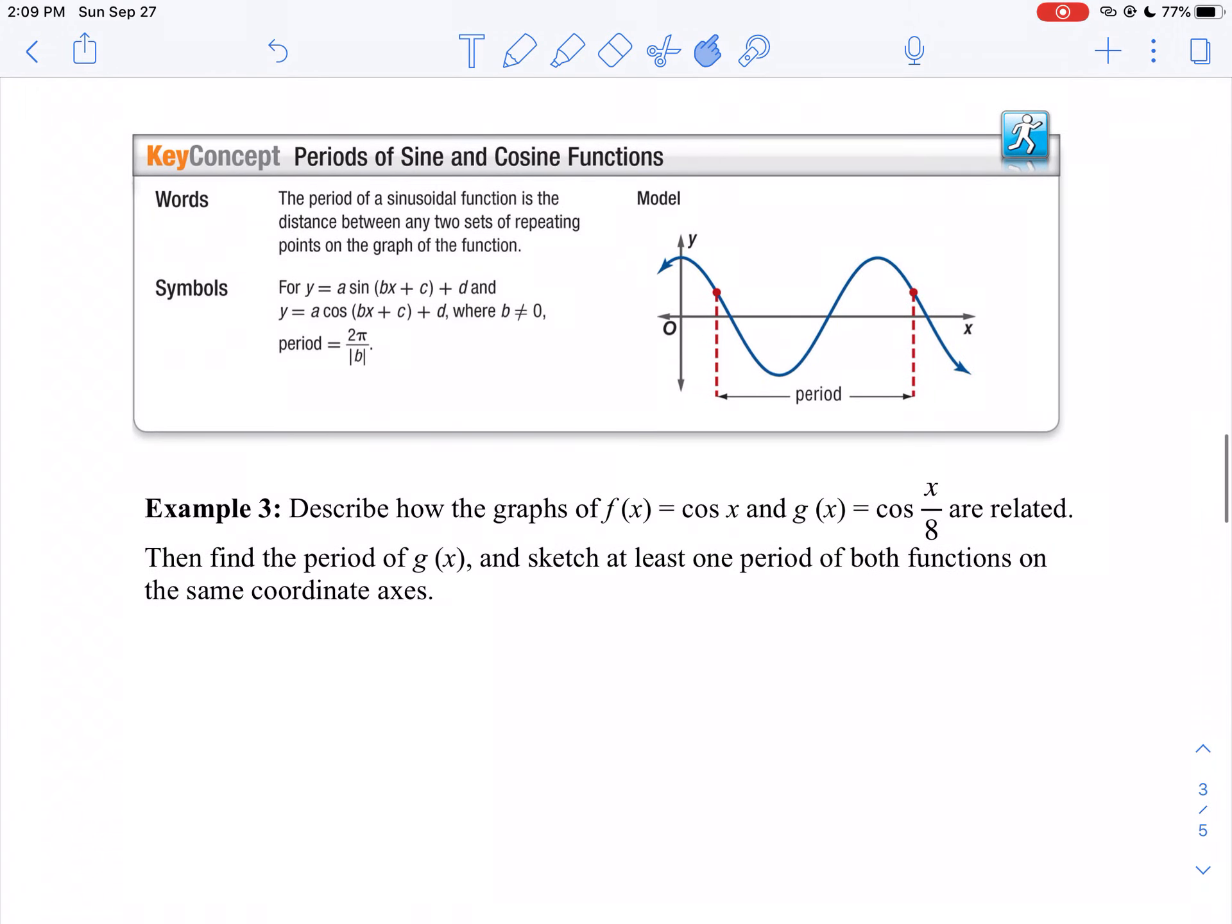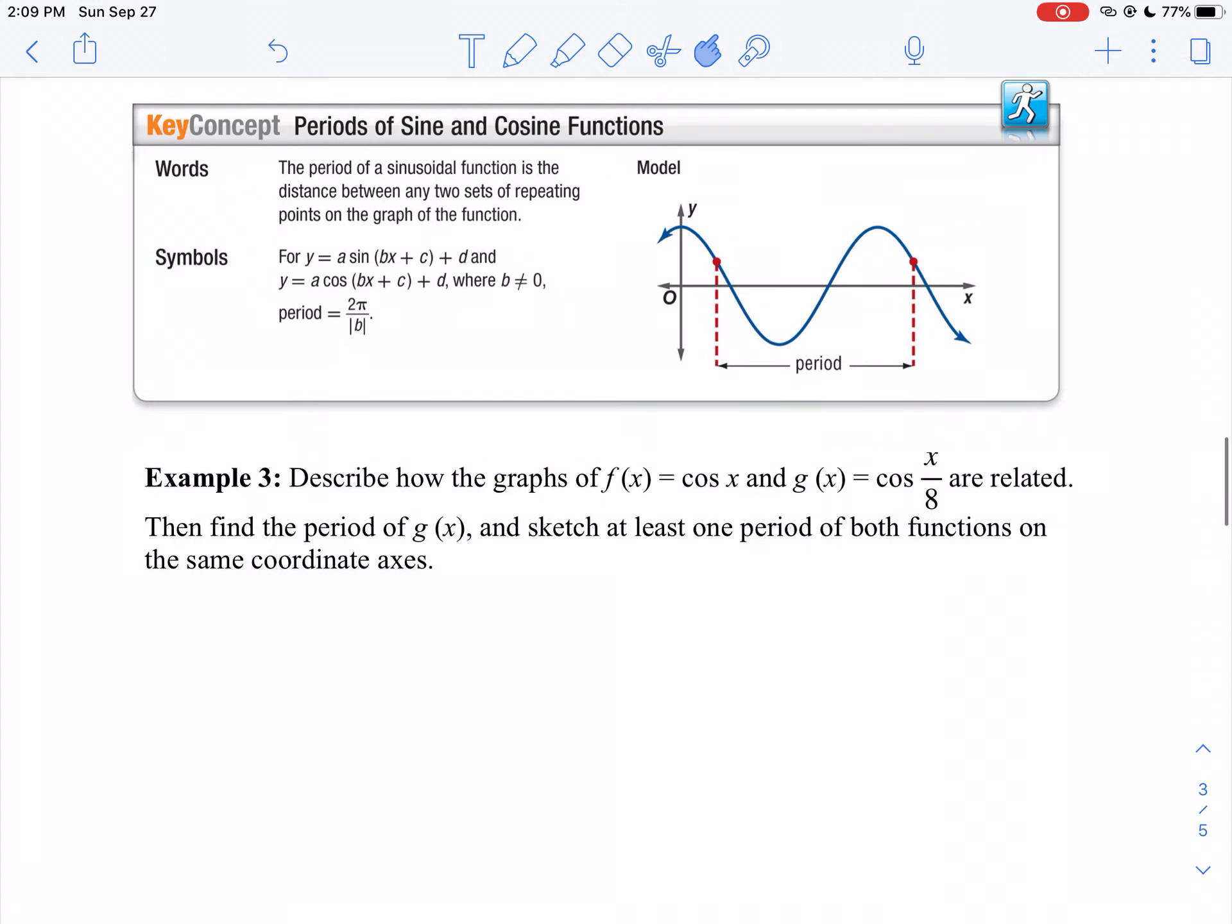In the next part of our seminar, we're going to be looking at what does b do to your function. So we're going to look at this value of b inside the parentheses, the thing you multiply by x. Well, b doesn't tell you much, but the period is 2π divided by the absolute value of b.